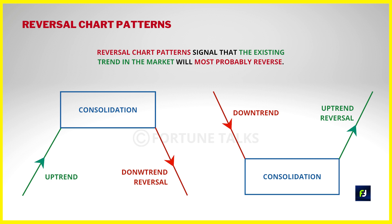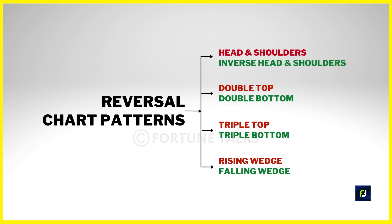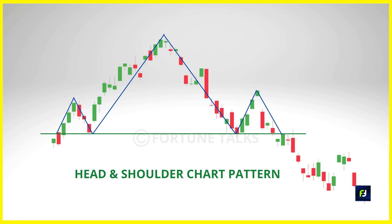Most of these reversal patterns are formed as consolidation in between the trends — it's like the market telling us that it is tired of going in a particular direction and is looking to move in the completely opposite direction after taking some rest. In this video I will be discussing four reversal chart patterns and their counter patterns: starting with the head and shoulders and inverted head and shoulders, followed by double top and double bottoms, then triple top and triple bottoms, and finally the rising and falling wedges.